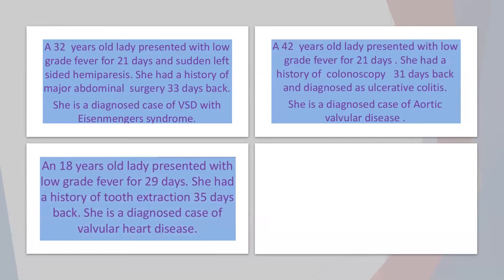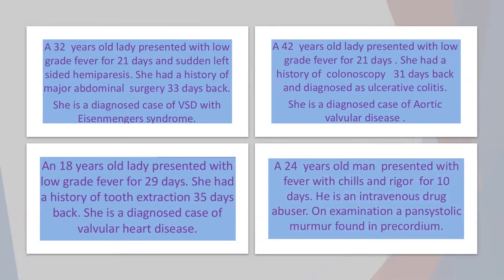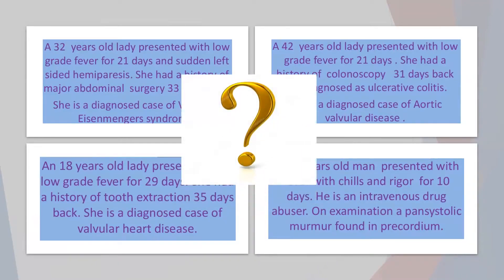An 18-year-old lady presented with low grade fever for 29 days, with a history of tooth extraction 35 days ago and valvular heart disease. A 24-year-old man presented with fever and chills for 10 days — he is an intravenous drug abuser with an apparent systolic murmur on examination. The common thread between all these cases is infective endocarditis, despite the different settings and scenarios.